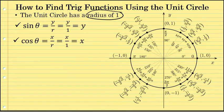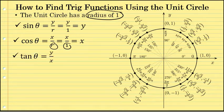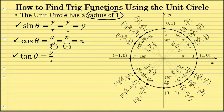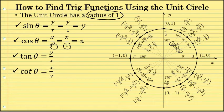Similarly, since the cosine ratio is x over r and r is one, the cosine of any angle on the unit circle is simply its associated x-coordinate. The tangent of an angle is y over x, which doesn't simplify on the unit circle because this ratio doesn't involve a radius, but we can still use the unit circle to find tangents of 30, 45, 60, and any other angle on the unit circle fairly easily.